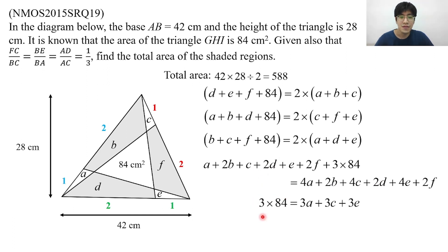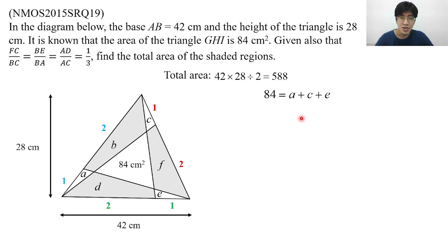What are we left with? We're left with 3 times 84 on the left and 3A, 3C, 3E on the right, which we can simplify to simply A plus C plus E equals 84. Now, how is this going to be useful? Did you notice something very interesting? This piece over here, A plus C plus E, these three pieces, add up with this 84 to give all the unshaded regions.